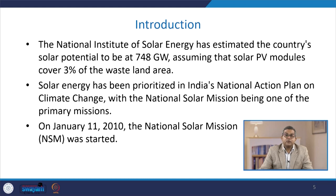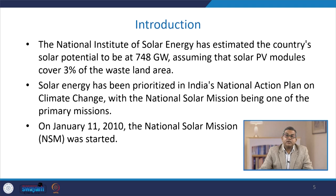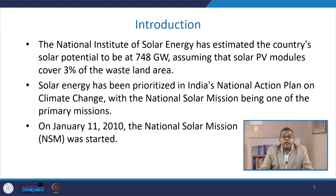The National Institute of Solar Energy has an estimate of the country's solar potential to be 748 gigawatt, assuming that solar photovoltaic modules cover 3% of the wasteland area. You can analyze and imagine how much potential we have with respect to solar energy.